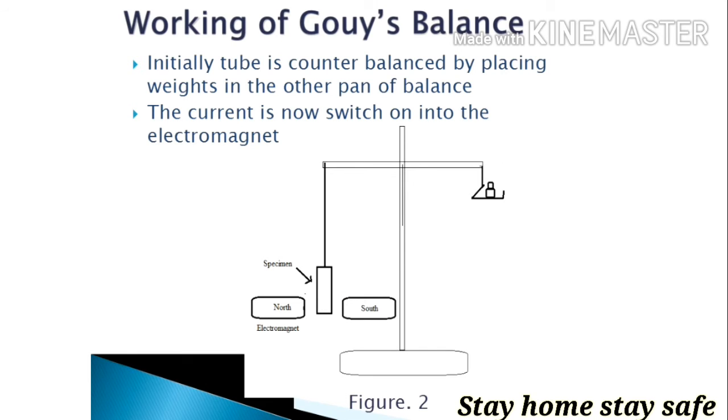Now working of Gouy balance, how it works. Initially what we do, we shut down the electromagnet, we don't supply electric current to the electromagnet, and we determine the weight of the substance whose magnetic susceptibility is to be determined by keeping weights into the pan.